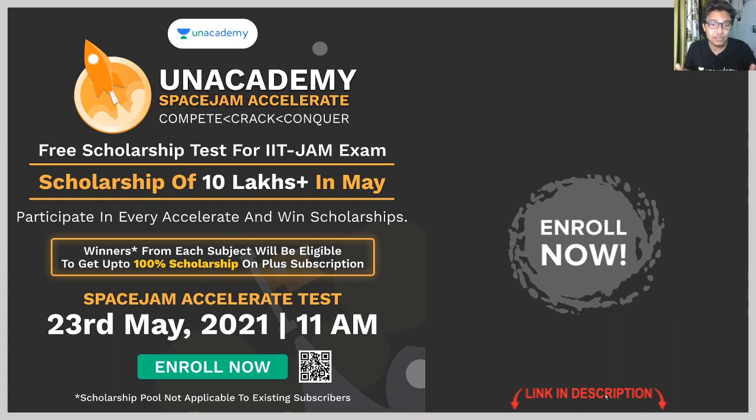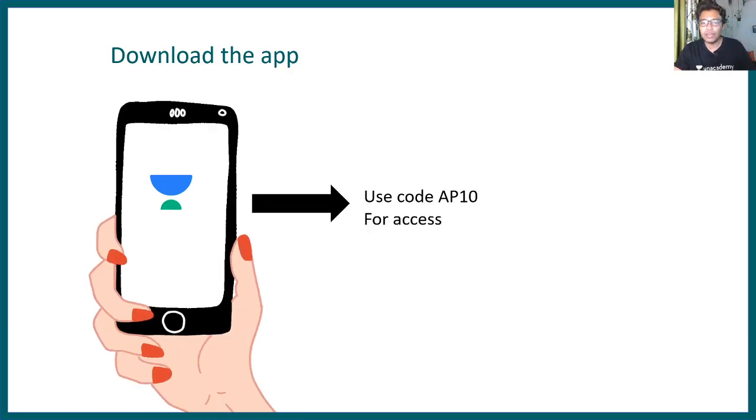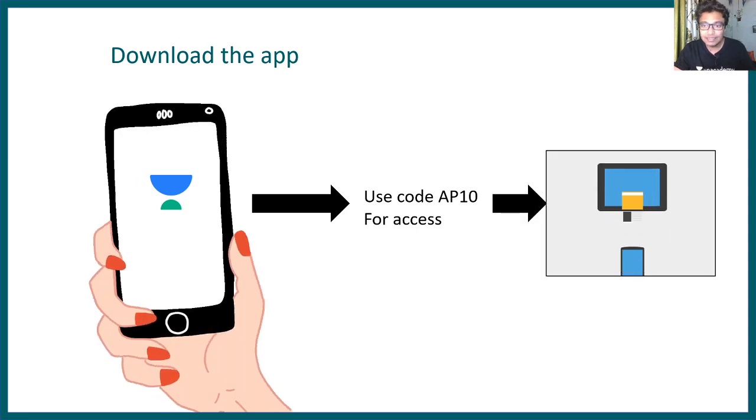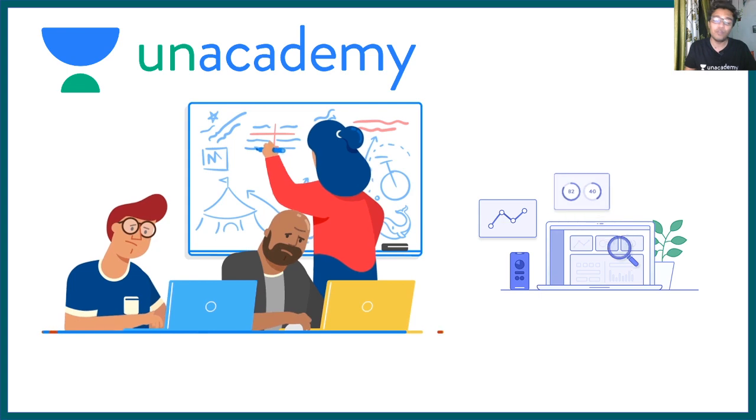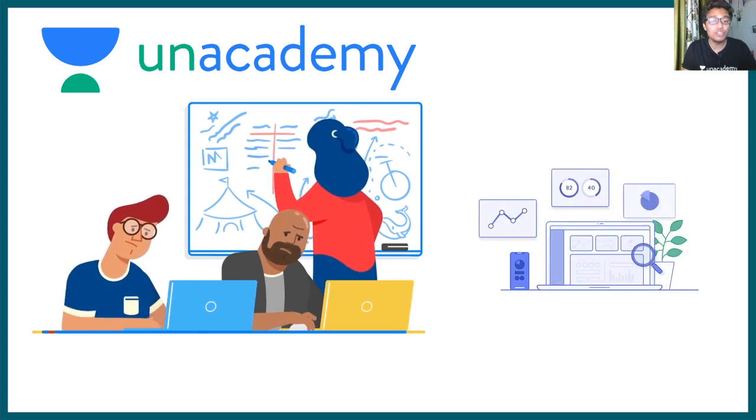And Unacademy brings you a Space JAM Accelerate Program which is a scholarship program which offers almost 10 lakhs of fellowship in the month of May. So all you need to do is go there, give this exam. The link is given in the description. The exam is tomorrow 11 a.m. If you score significantly well then the scholarship would be for you and you must be eligible for 100% scholarship. That means the entire Plus course would be free for you. So don't waste your time, enroll right now. Even if you don't qualify, you would get some idea that what kind of questions are asked. It's always nice to do some kind of practice session all the time.